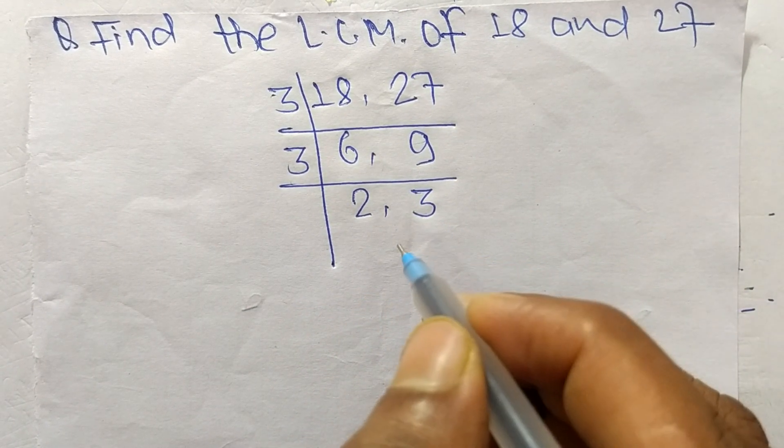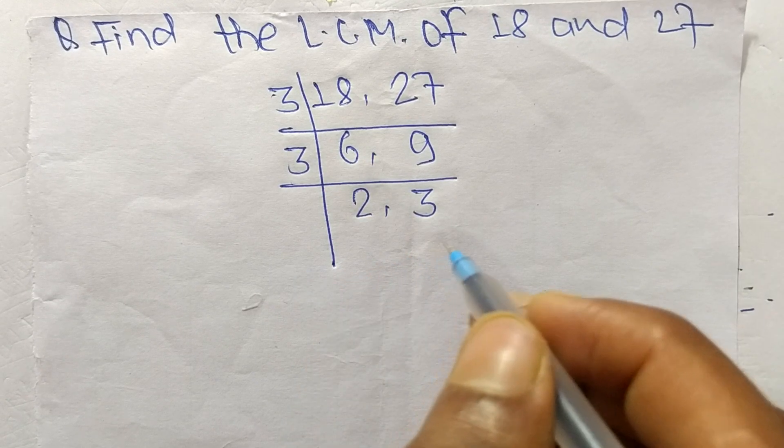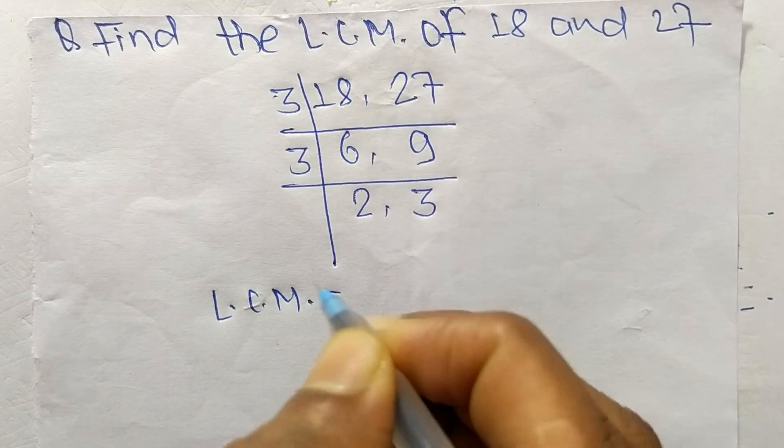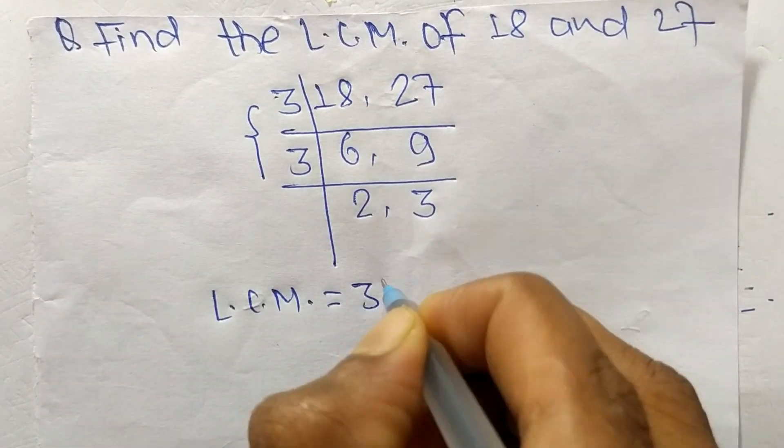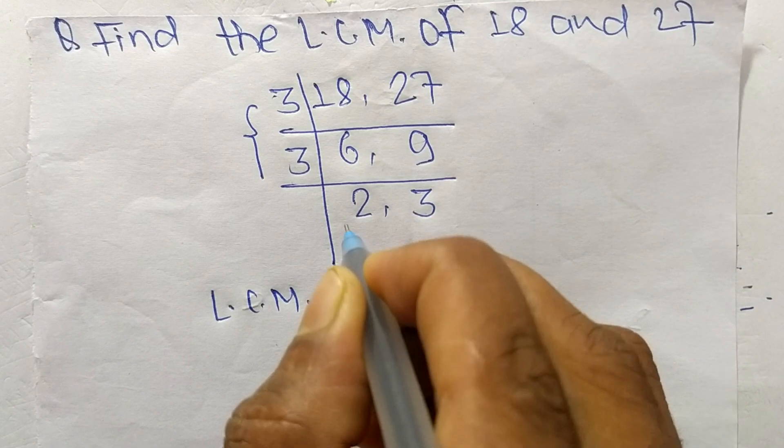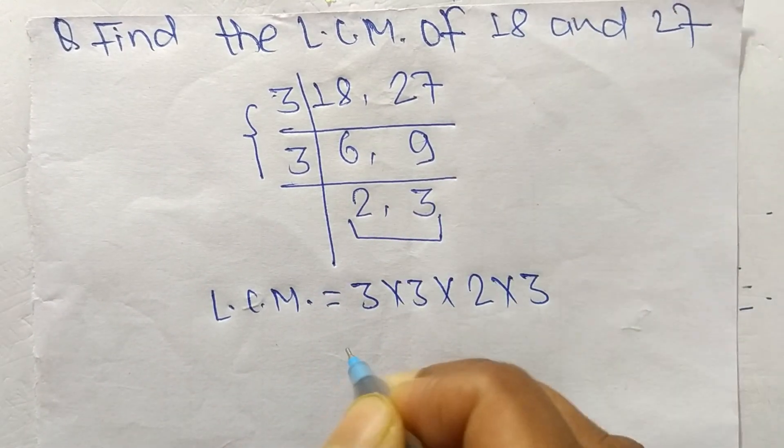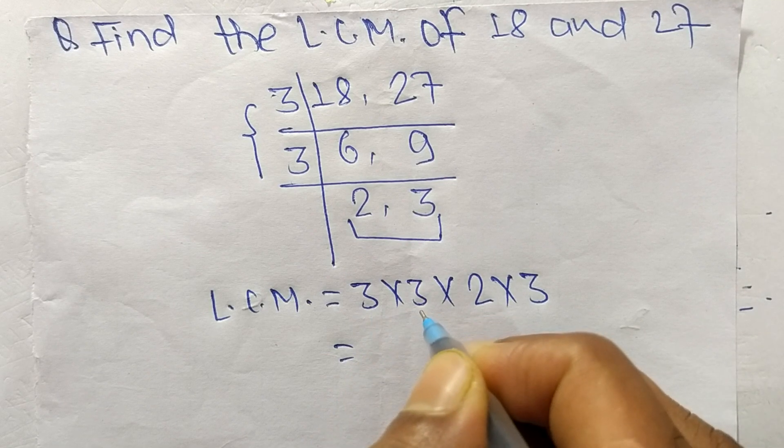Which are not exactly divisible by the same number, so its LCM is equal to, from this part it is 3 times 3, and from this part it is 2 times 3. So 3 times 3 equals 9.